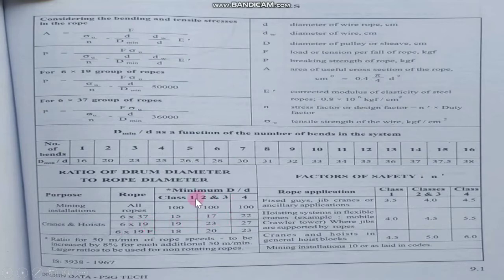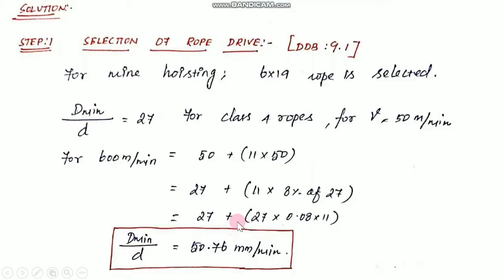We select class 1, 2, 3, or 4. We will select class 4, which gives d_min/D = 27. For mine hoist, we select 6×19 rope, and that gives d_minimum by D equal to 27.